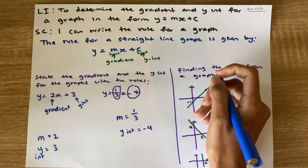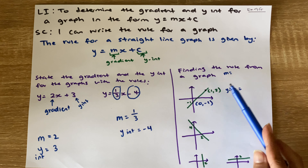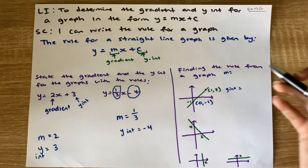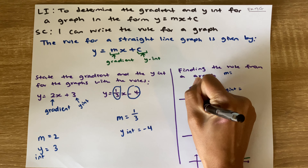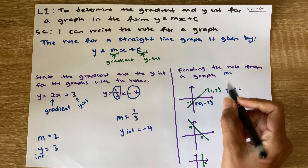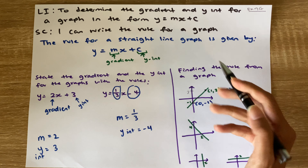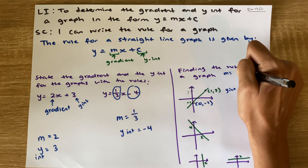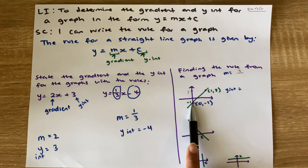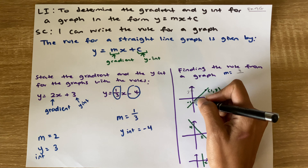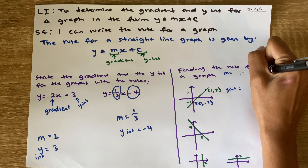We've been given the y-intercept as negative 1, so we know this point is (0, negative 1). And we have been given another coordinate, which is (1, 3). To figure out our gradient, remember we do rise over run — how much difference in my y-values over how much difference in my x-values. How far from negative 1 up to 3? The difference between negative 1 and 3 is 4. So my rise is 4. And the difference between x-coordinate 0 and x-coordinate 1 is 1.